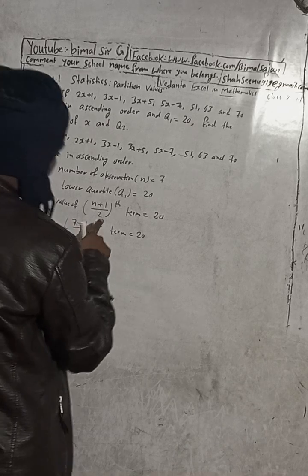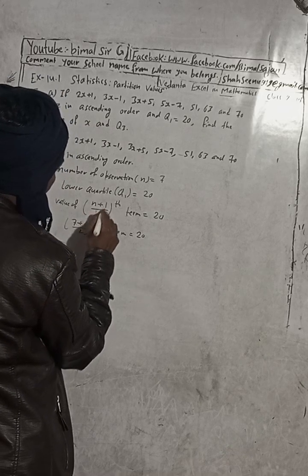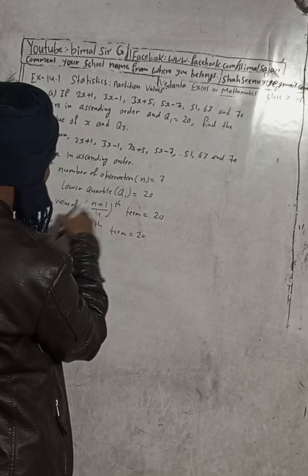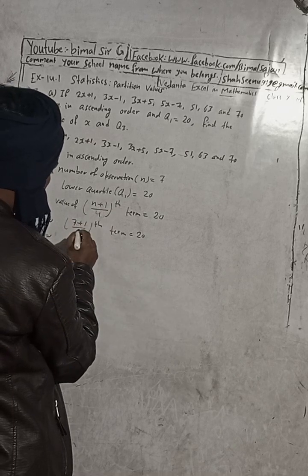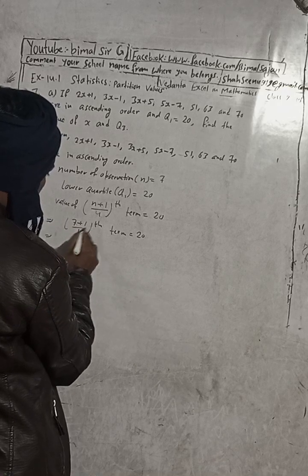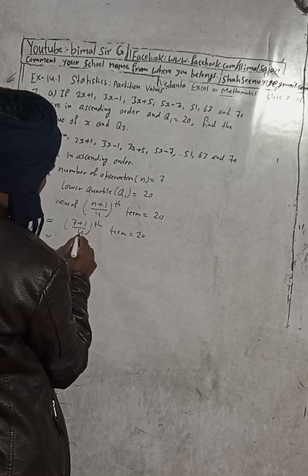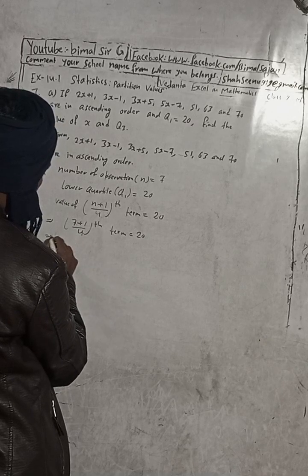This formula is the (n+1)/4 th item — this is called Q1. So now seven plus one is eight, and eight divided by four equals two. So this is equal to the 2nd term.